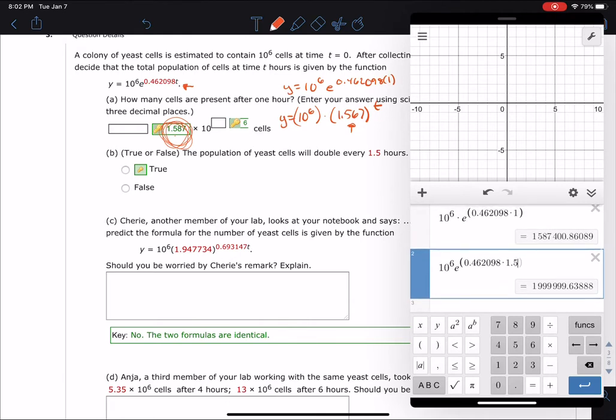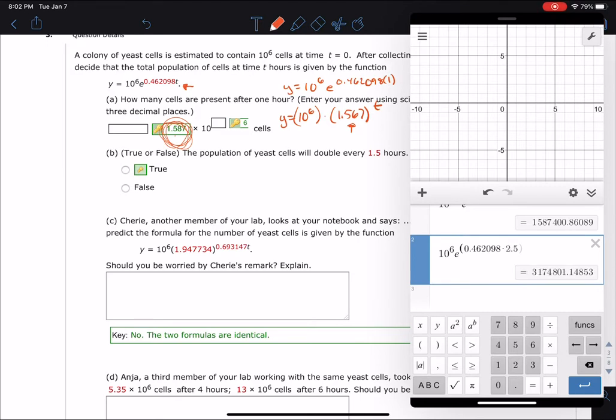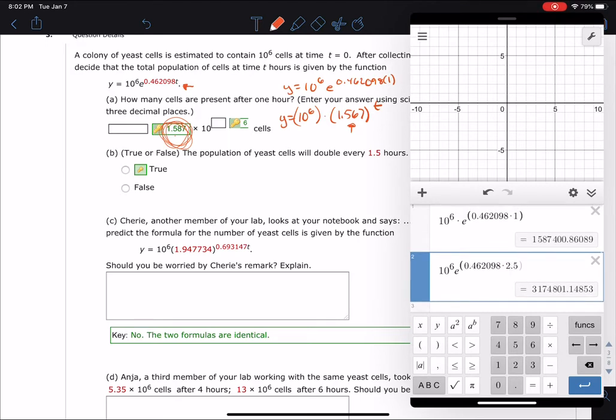Oh, so I need to actually 2.5 because I need it to be 1.5 hours longer. And so 1.5 hours after one hour is 2.5. And now I can see that, what is that? 3,174,801 is exactly double of 1,587,400.